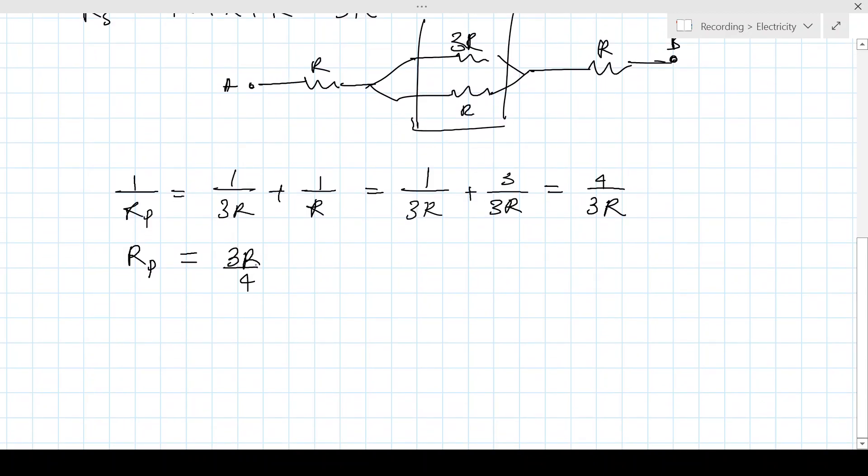So now our circuit looks like this: A, R, 3R by 4, R, then B.